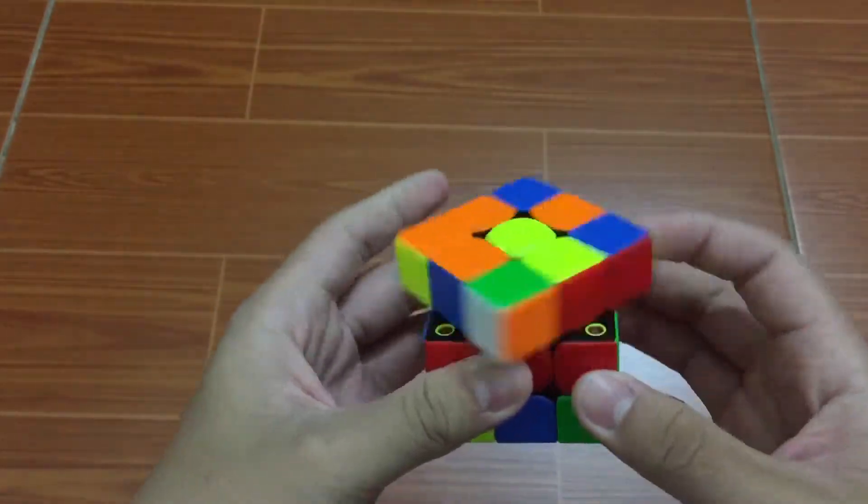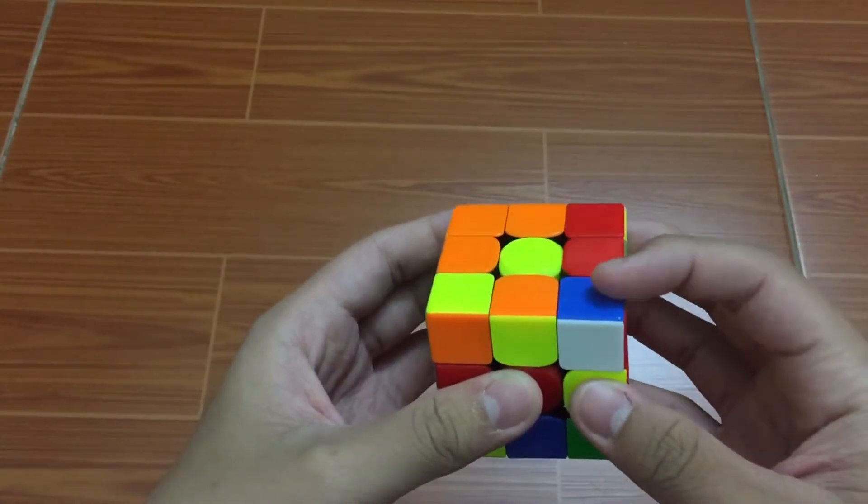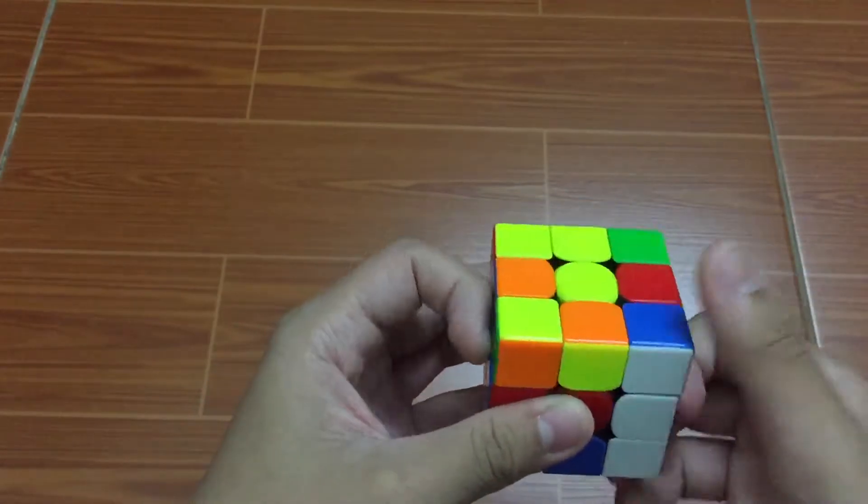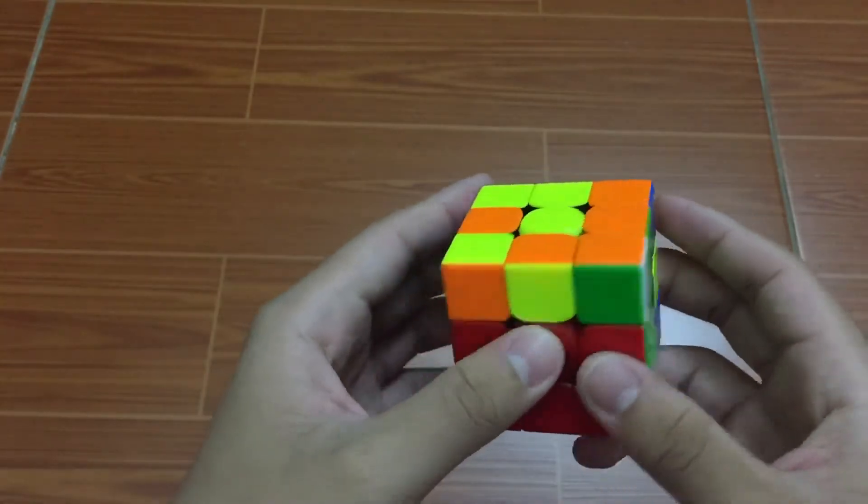So you're just gonna treat this pair like a normal F2L pair. Then you insert it in, you push it back, and there you go.